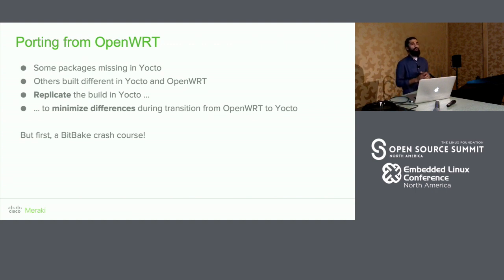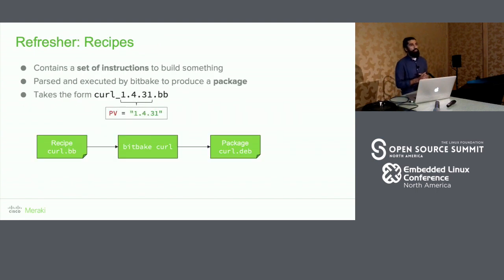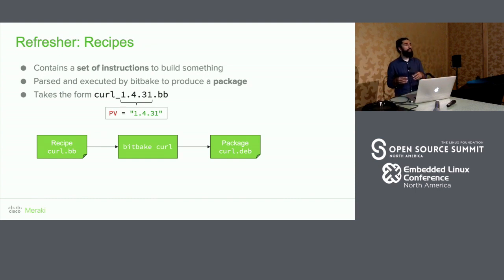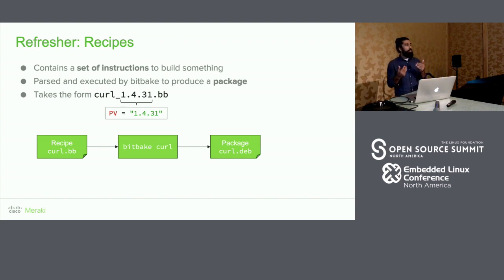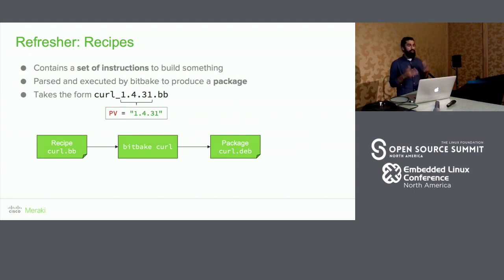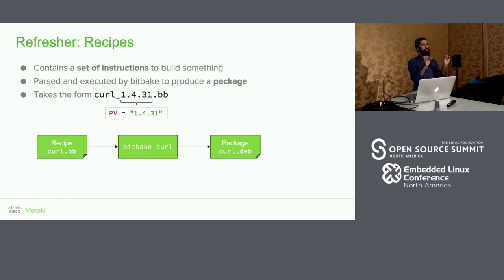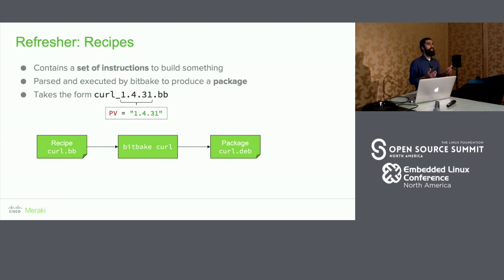Before going into that, let me give a quick crash course on BitBake. A recipe is the basic unit of input into a BitBake run — it's a set of instructions parsed by BitBake and executed to produce a package. A recipe is written as a BitBake file named with the package name followed by an underscore and the version. This version is passed into a variable called PV, short for package version.